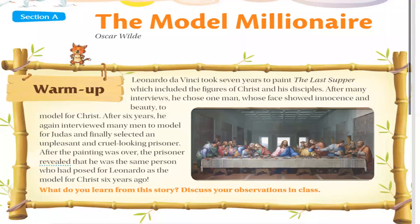The chapter 'The Model Millionaire' is written by Oscar Wilde. For a warm-up: Leonardo da Vinci took approximately seven years to paint 'The Last Supper,' which included the figures of Christ and his disciples. It was a masterpiece.